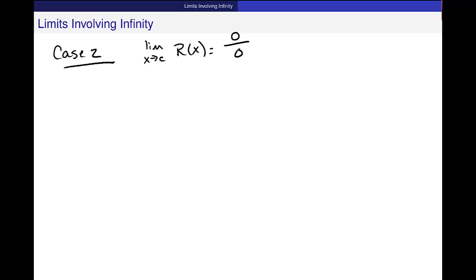And in that case, we have to do some sort of manipulation to find out what's happening. So I want to take an example. The limit as x approaches 5 of x squared minus 3x minus 10 over x minus 5.